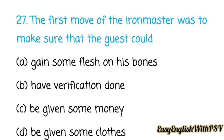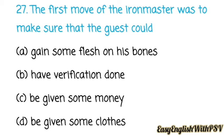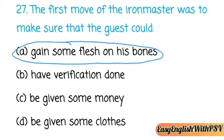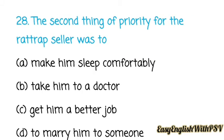Question number twenty-seven: The first move of the iron master was to make sure the guest could — gain some flesh on his bones, have verification done, be given some money, or be given some clothes? His first intention was to provide good food so he could get some flesh on his bones. Question number twenty-eight: The second priority was to get him a better job.